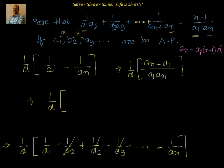So, I can go back and say an minus a1 equal to n minus 1 into d divided by a1 into an. Now, I can cancel d and d. I will be getting n minus 1 divided by a1 into an. That is what we have to prove.